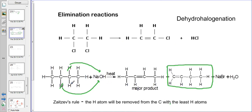The important point to highlight here is: where does the double bond form? Does it form between the first and second carbon, or the second and third carbon? That's where Zaitsev's rule comes in. He says the hydrogen atom will be removed from the carbon with the least number of hydrogen atoms. The end carbons have three hydrogens attached, while the middle carbons each have fewer hydrogens. So the double bond will be formed between the second and third carbon — and if you look here, that's exactly what happens. The double bond forms between the carbons that have the least hydrogen.